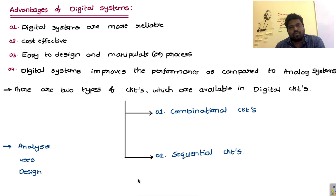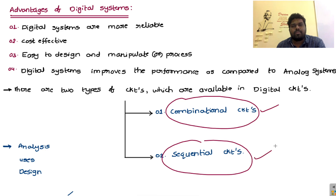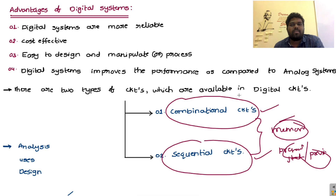There are two types of circuits in digital electronics: combinational circuits and sequential circuits. The basic difference between the two is memory. Combinational circuits do not have any memory elements, so they depend only on the present state. Sequential circuits have memory elements, which allows us to consider both the present state and the past state.